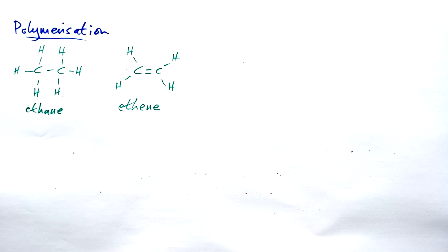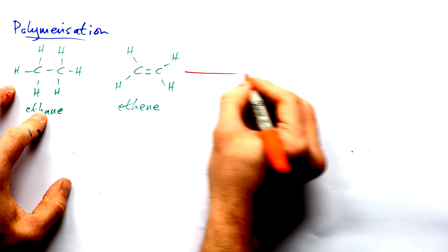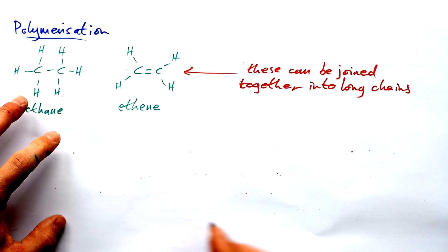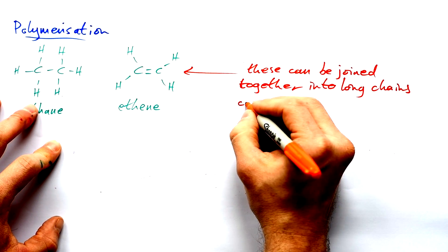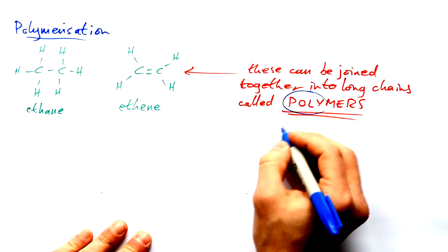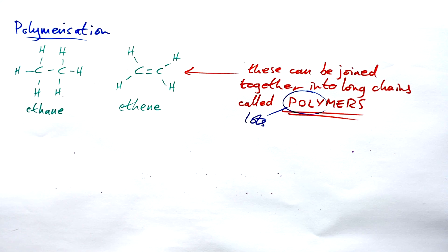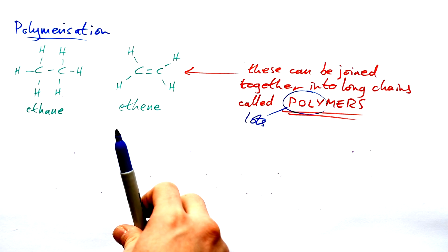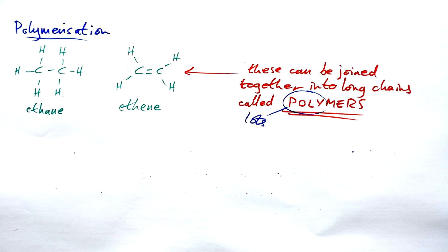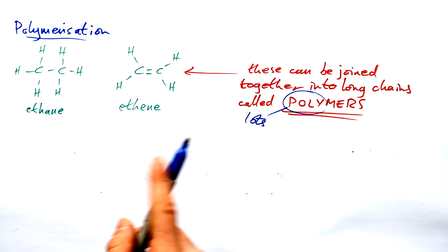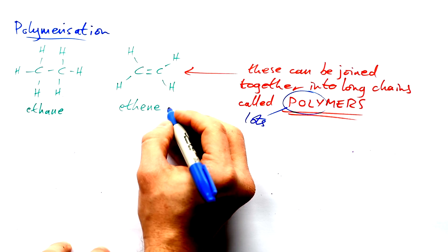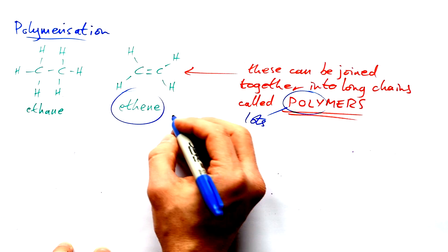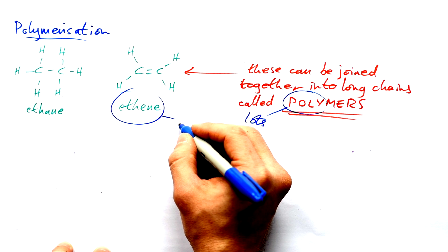Last time we saw how we can test for an alkene, but this time we're going to join them together into long chains called polymers. Poly means lots, and so a polymer is a molecule that's made up of lots of smaller molecules. You can use all sorts of different unsaturated hydrocarbons like ethene and join them together. This is the monomer.